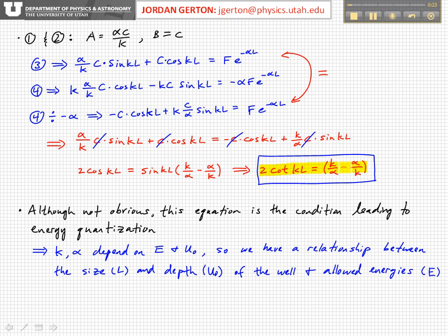well, k and alpha depend on the energy E and the potential energy U naught, potential height U naught, and now we have this dependence on the length of the box